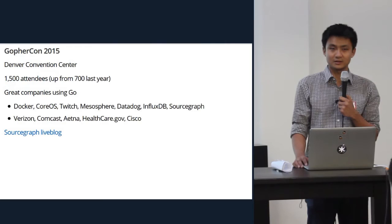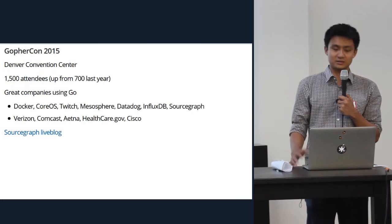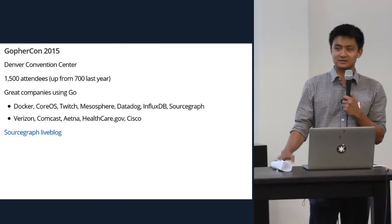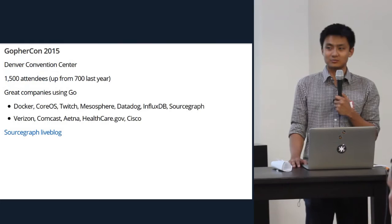There were 1,500 attendees, which is more than double what it was the year before, which is amazing. There were a lot of great companies well represented there that are using Go — the usual suspects: Docker, CoreOS, Twitch, Mesosphere, Datadog, InfluxDB, and Sourcegraph.